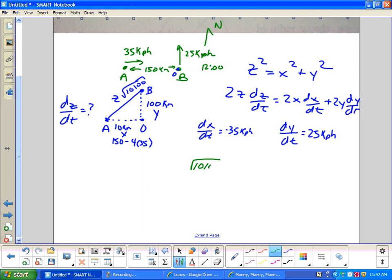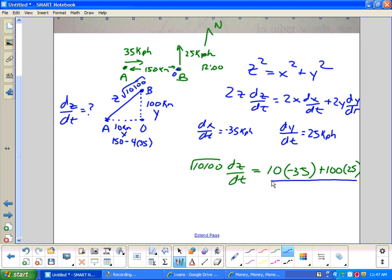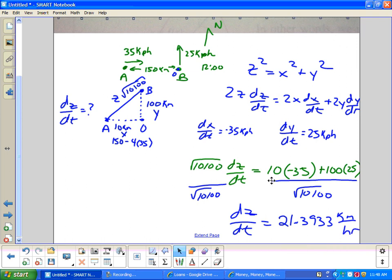We can calculate Z: square root of 100 squared plus 10 squared equals square root of 10,100. The hard part of this problem is realizing that dY/dt is positive 25 kilometers per hour, but dX/dt is negative 35 kilometers per hour because it's closing the distance. Now it's just plug and chug. So square root of 10,100 times dZ/dt equals 10 times negative 35 plus 100 times 25. I get 21.3933 kilometers per hour is the rate of change. So it's increasing at this point. That's problem 10.